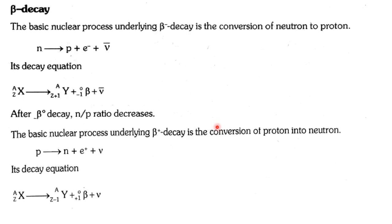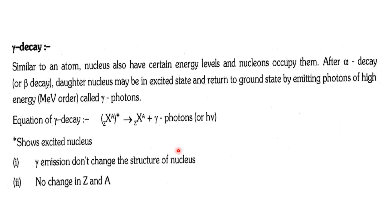For beta emission, there are two types: beta-negative decay and beta-positive decay. Beta decay involves either the conversion of a neutron to a proton, or a proton to a neutron. When an unstable nucleus X undergoes beta decay and converts to a daughter nucleus Y, the atomic number changes by one.